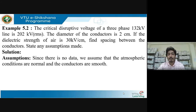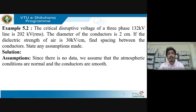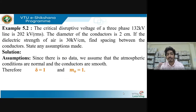Since there is no data pertaining to atmospheric conditions, and whether the conductor surface is rough or smooth is not mentioned, we assume atmospheric conditions are normal and conductors are smooth. If atmospheric conditions are normal, δ (delta) equals 1, and if conductors are smooth, the irregularity factor m₀ is taken as 1.